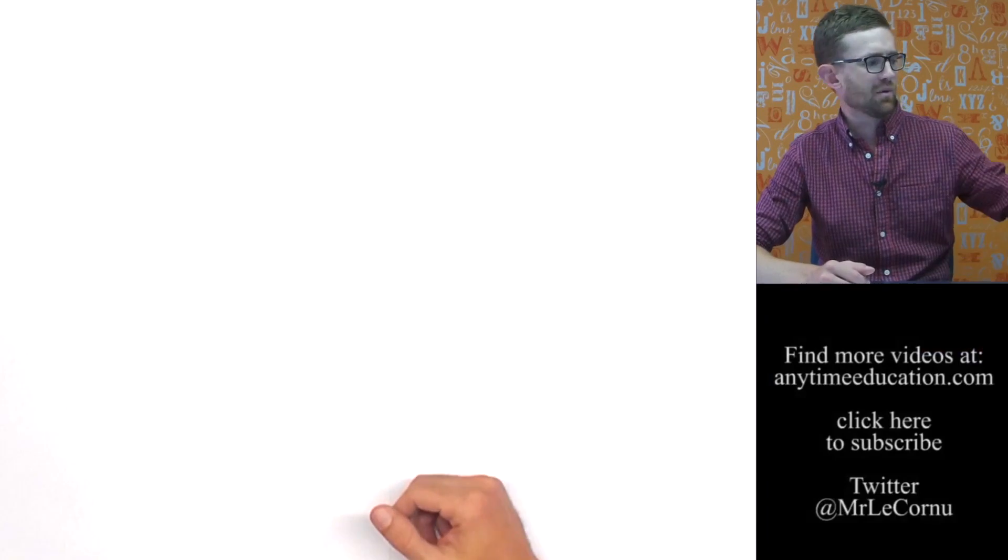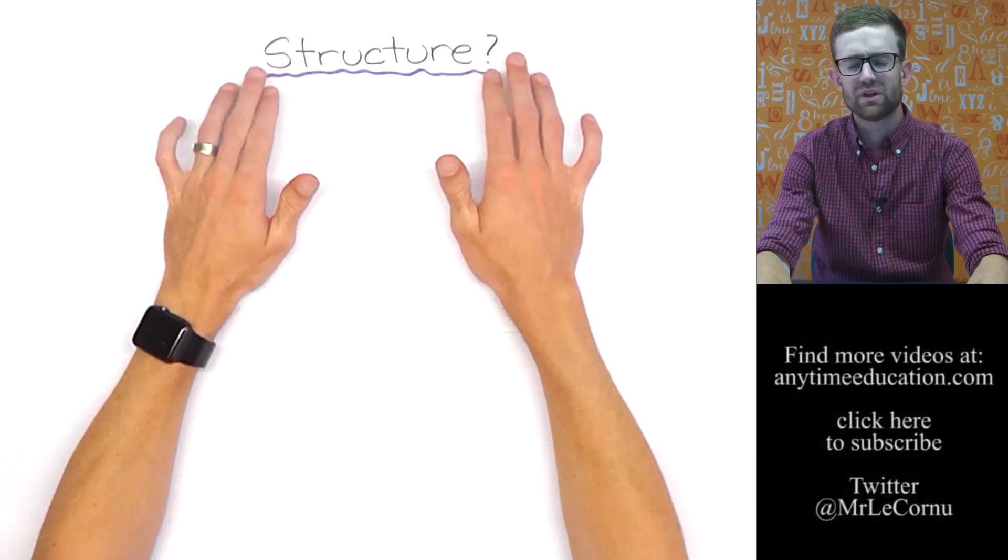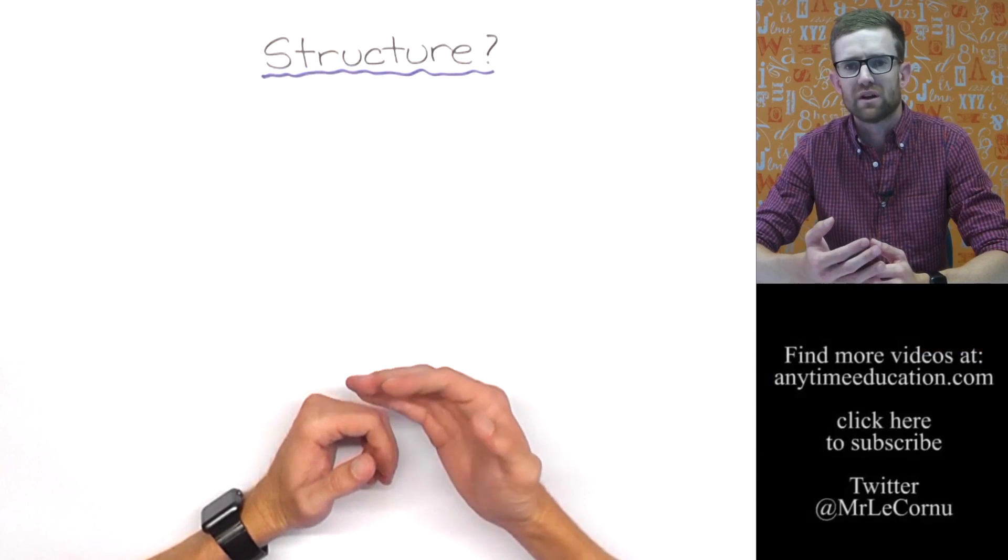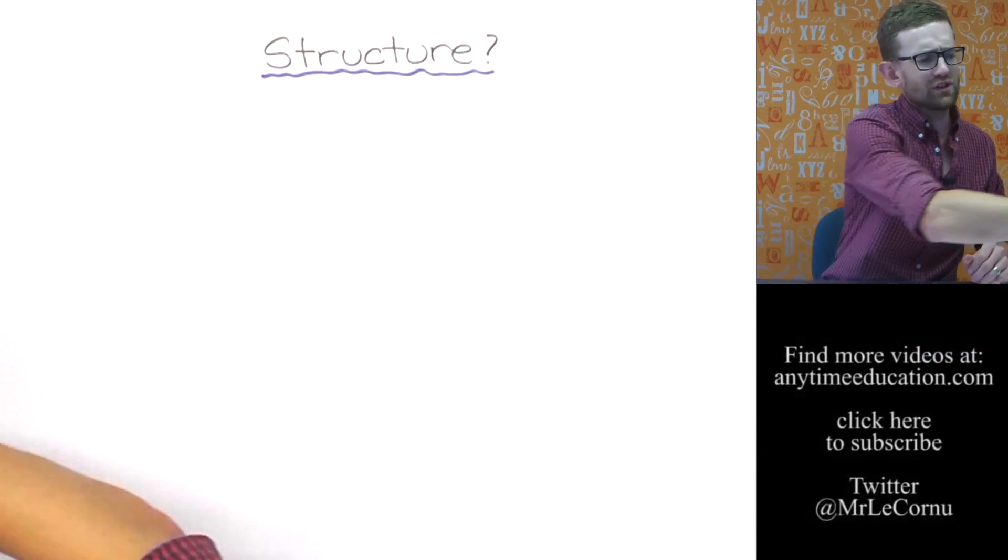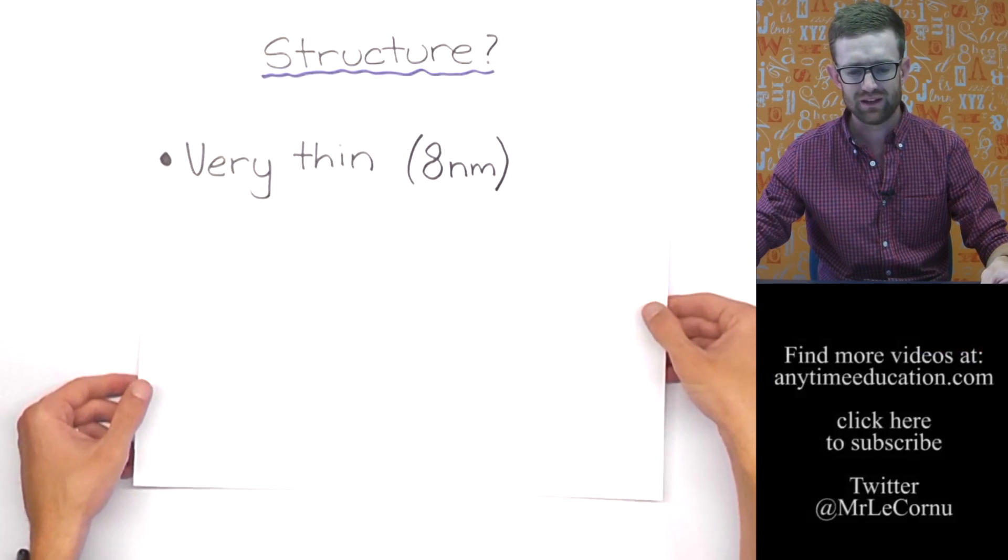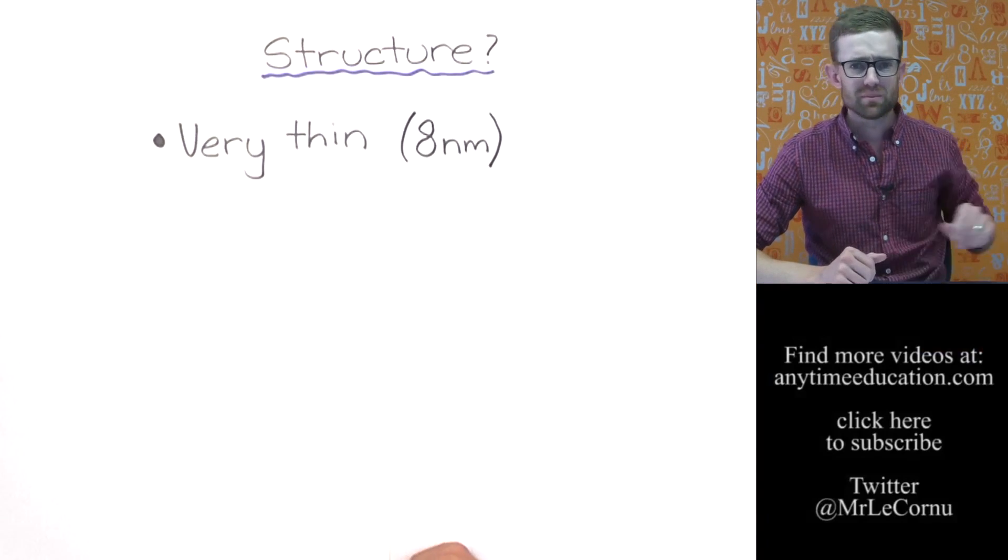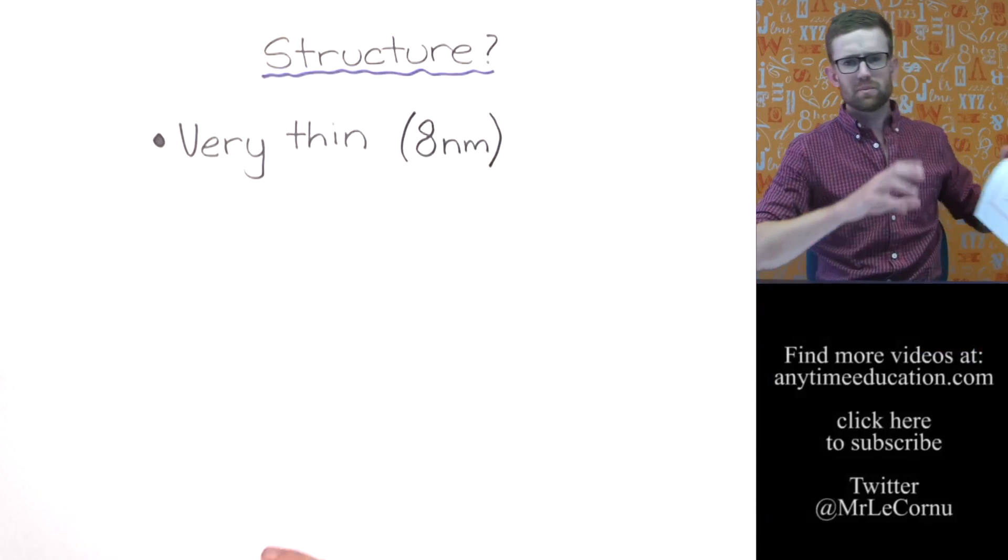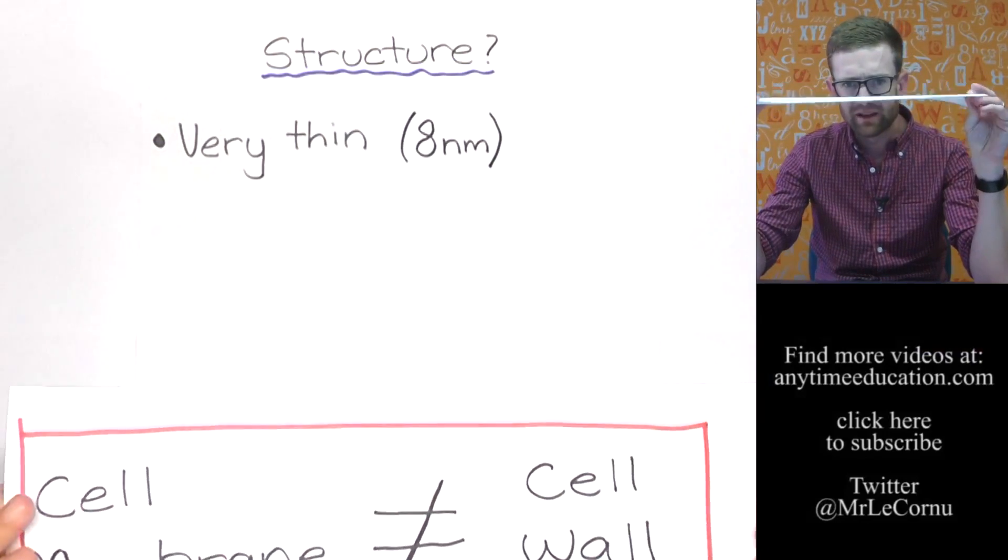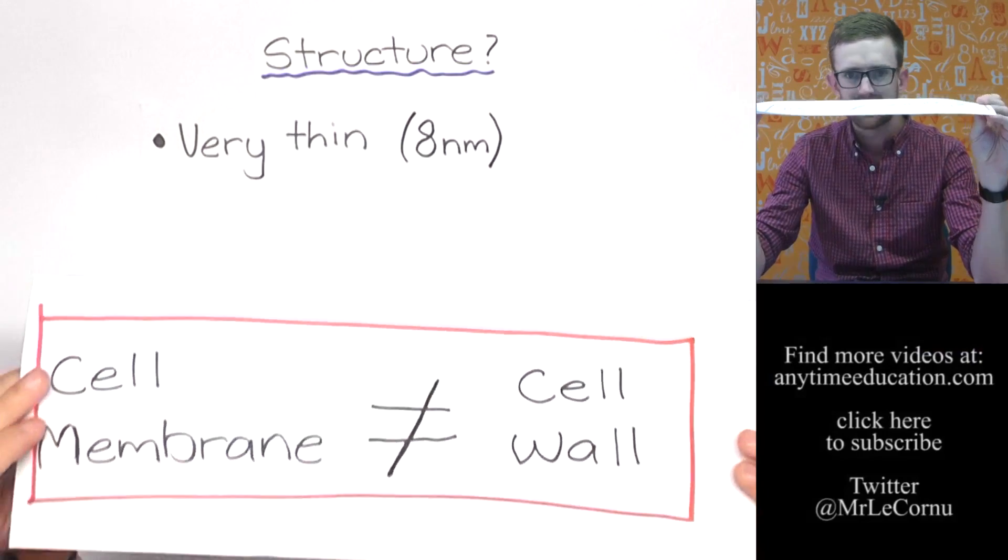So let's start by looking at the structure. When we're looking at the structure, we're asking questions like, well, what's it look like and what is it made of? So the first structural feature is that the cell membrane is very, very thin, about eight nanometers thick. To give you some perspective on that, this piece of paper is about a hundred thousand nanometers thick, so that gives you some idea about how thin we're talking for this cell membrane.